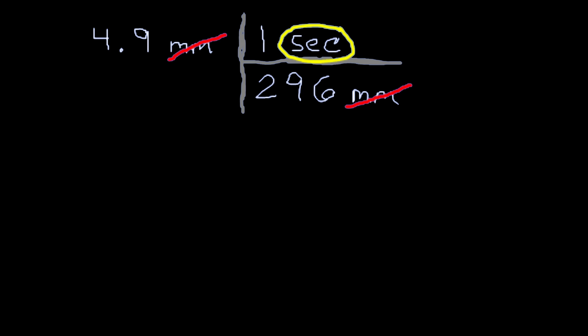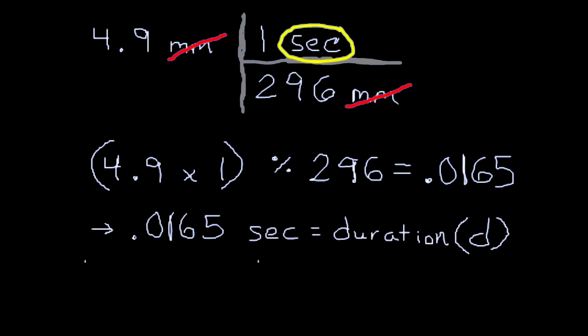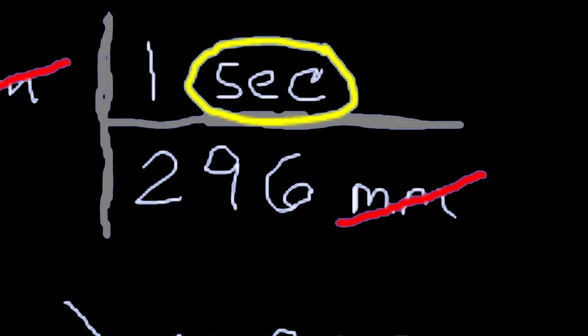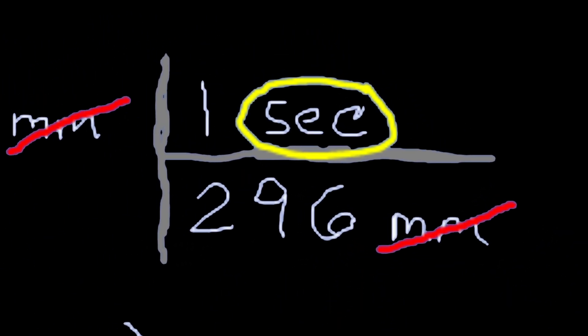This way millimeters divided by millimeters, these will cancel. So essentially what we have here is we're going to do some arithmetic. 4.9 times one, of course it's just 4.9. So then you have 4.9 divided by 296. So again, the time base, we're using that time base to calculate the duration. So we cancel the millimeters.